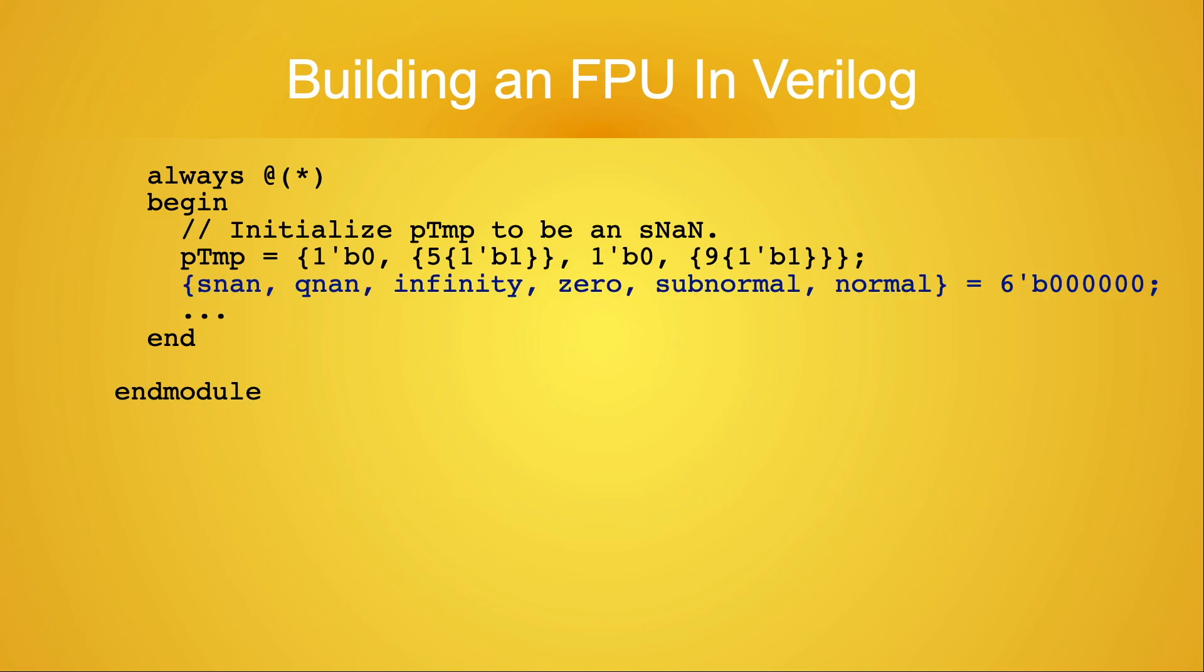The next statement initializes all the 1-bit output flags to 0. Please note that at the end of the module one of these flags must be set to 1, and the rest must be set to 0. If we reach the end of the module and this condition isn't met, we have an error. We need to remember this later when we write our test bench code for this module.